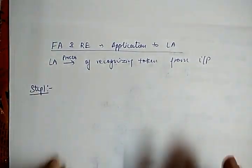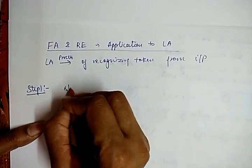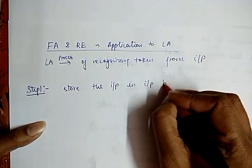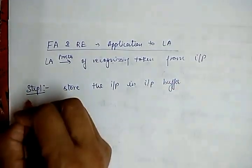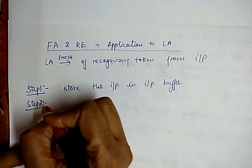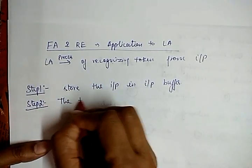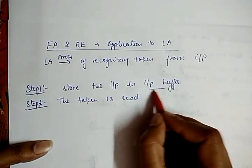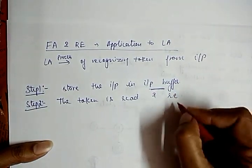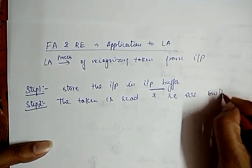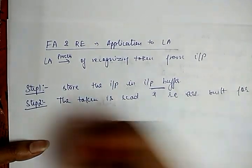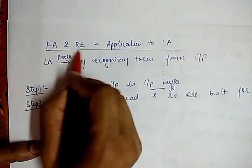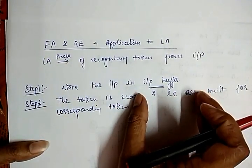Step one: the lexical analyzer stores the input in an input buffer. Step two: the token is read from this input buffer, and regular expressions are built for the corresponding token. This is how regular expressions are used in the lexical analyzer.